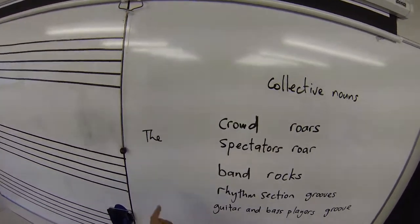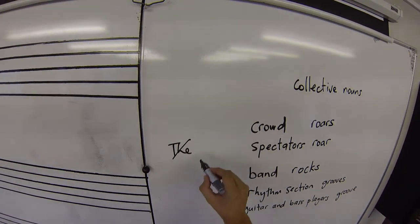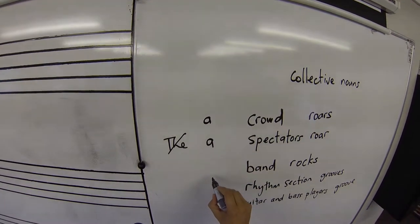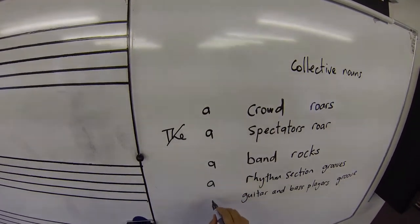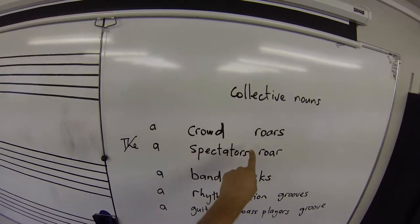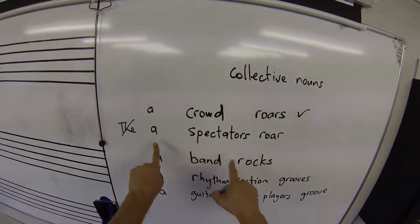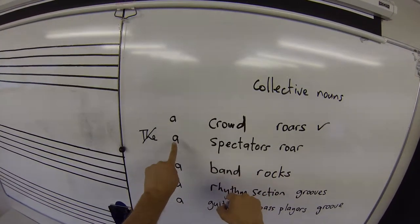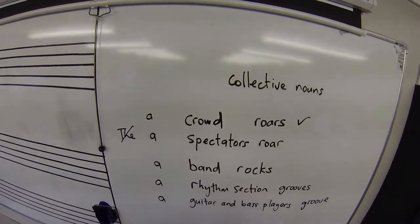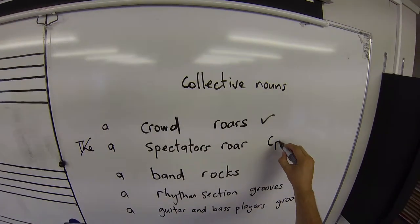Well, I think just for a moment, take the out and replace it with a. A crowd roars — that works fine. A spectators roar — it doesn't make sense. You can't have 'a' with something that's plural. A spectators — so that means you know that this is plural.